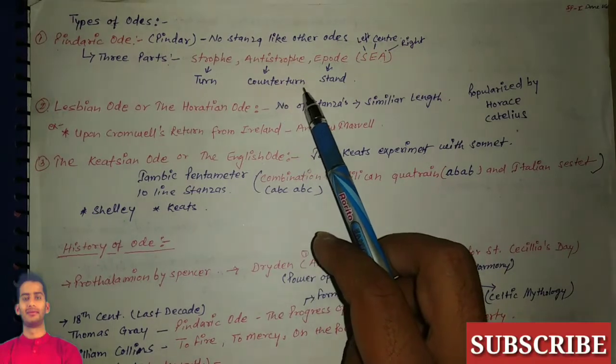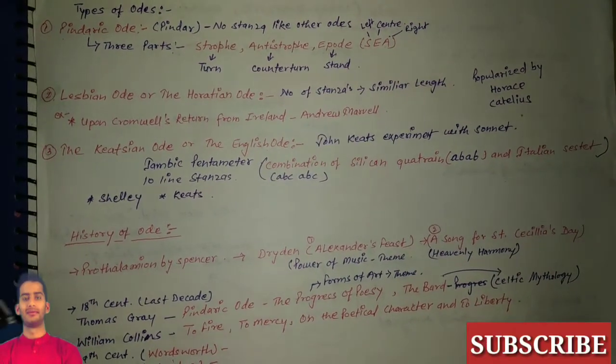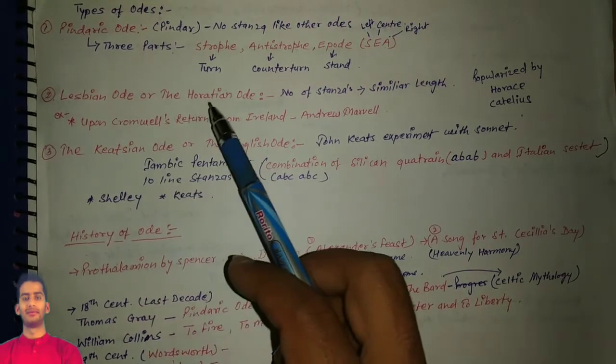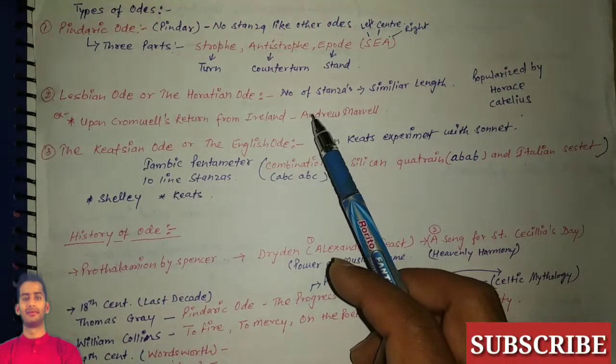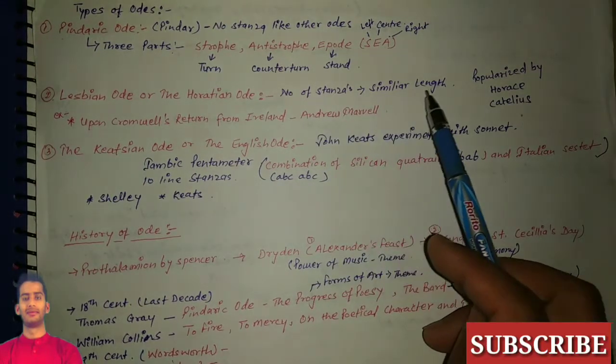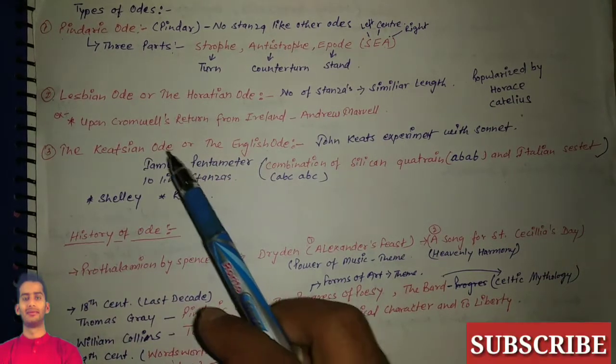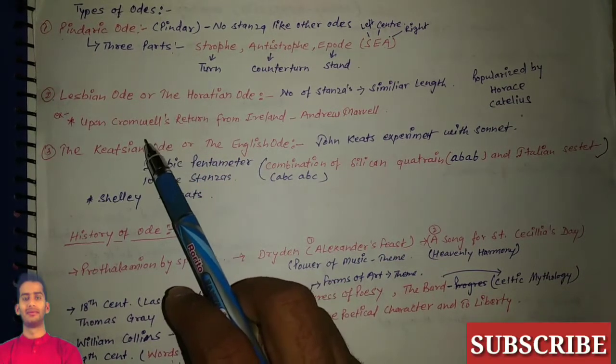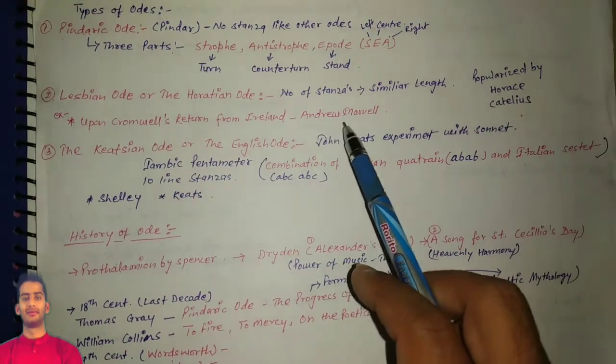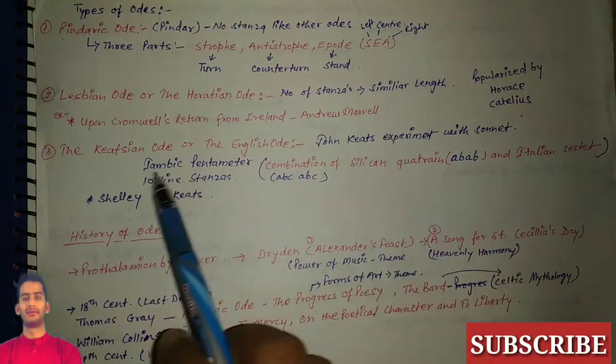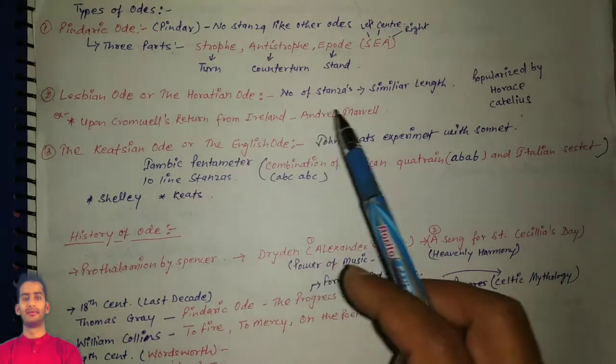Now let's see the second one: Lesbian ode or the Horacean ode, with a number of stanzas of similar length. For example, we have Upon Cromwell's Return from Ireland, written by Andrew Marvell. This type of ode was popularized by Horace and Catullus.